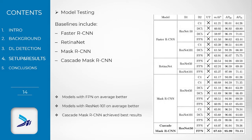Model baselines include Faster-RCNN, RetinaNet, Mask-RCNN, and Cascade Mask-RCNN. Testing the models on our dataset, it is clear that models with FPN and with deeper networks score on average better. Cascade Mask-RCNN showed the best results in terms of mean average precision.